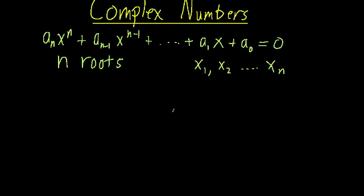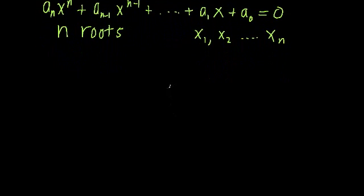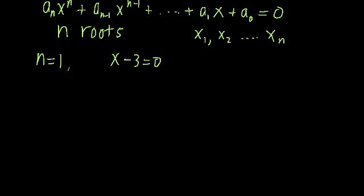Let's take a deeper look at this. For the case where n is equal to 1, this gives us what we call linear equations. For example, x minus 3 equals 0 is a linear equation. When n equals 1, there is one solution, and the solution is fairly obvious: x is equal to 3.